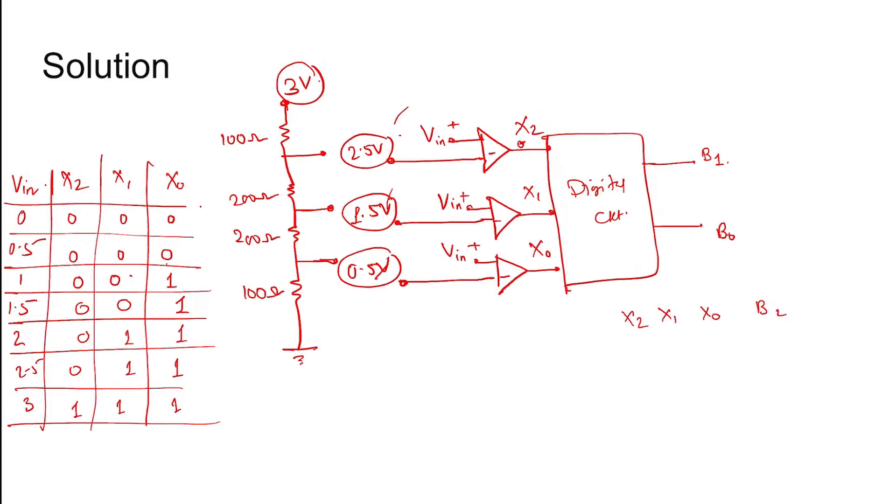Taking the inputs x2, x1, and x0 and forming the truth table with outputs b2, b1, and b0, we get: for 0,0,0 the output is 0,0,0; then 0,0,1 gives 0,0,1; then 0,1,1 gives 0,1,0; and 1,1,1 gives 0,1,1.